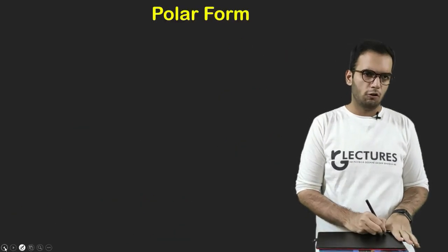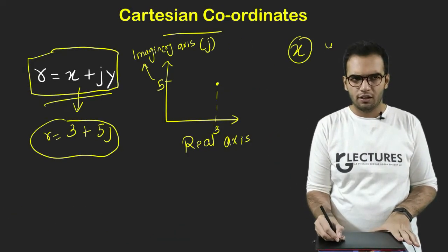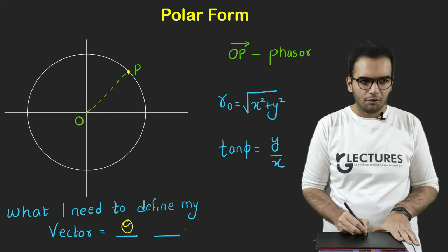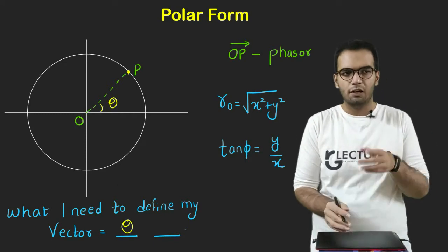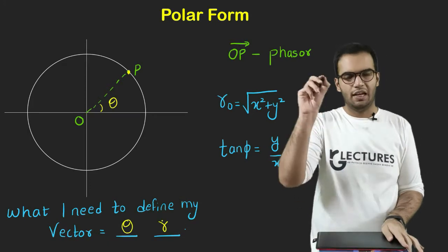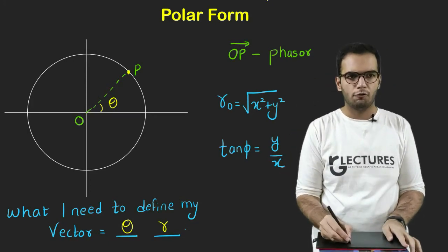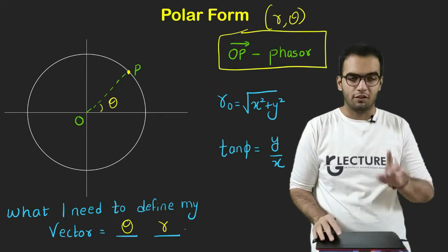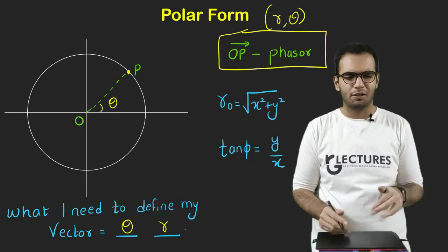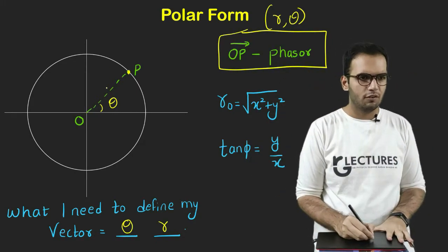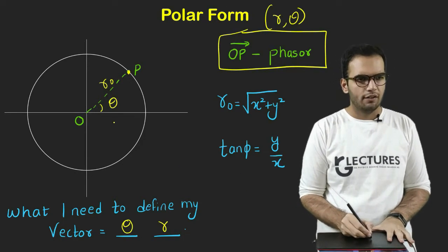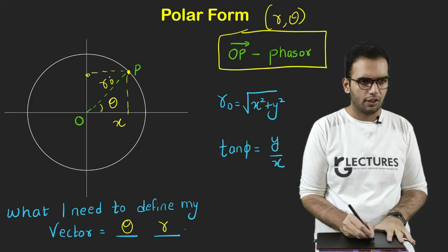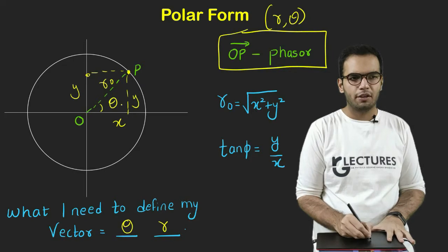In the Cartesian system also I needed two things - that would be my X coordinate and my Y coordinate. In the same way, in polar form also I need two things. That is the angle with which it makes, which it is making with, and the length of the vector, the radius. So polar form is generally referred to as R and theta, and OP is again my phasor. We covered in the last video or we will see in the coming videos. Phasor will be everywhere. So suppose this is my length R0. This will be the X projection, this will be the Y projection.